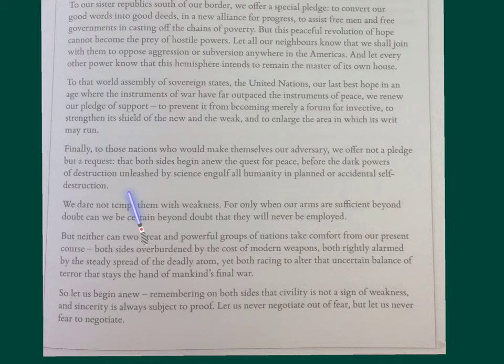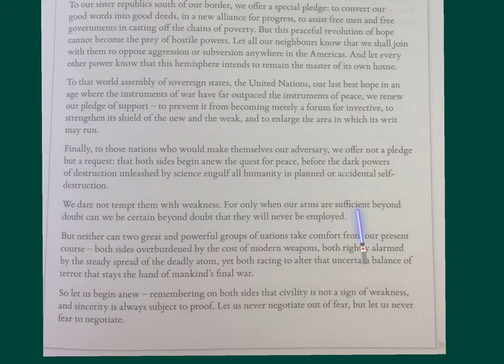'We dare not tempt them with weakness, for only when our arms are sufficient beyond doubt can we be certain beyond doubt that they'll never be employed.' There's a bit of diacopy here — 'beyond doubt' — that phrase is framed there for emphasis. He's saying he's not going to be weak; he's going to keep this weaponry, and it's there as a defence.